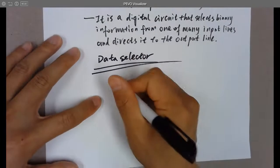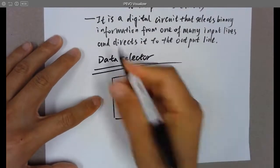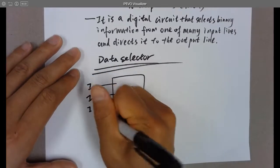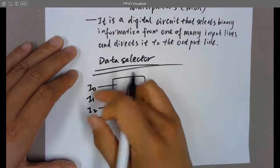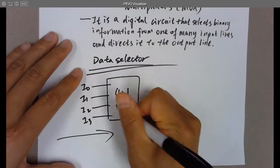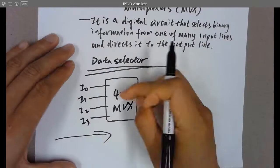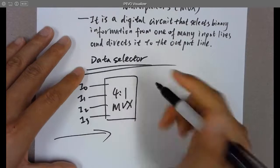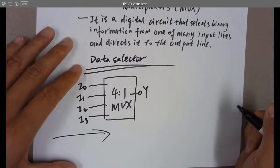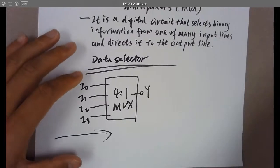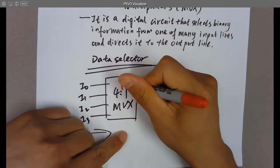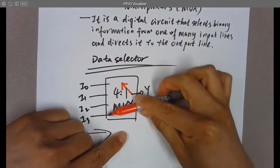If you draw a digital block, for a 4-to-1 MUX you have inputs I0, I1, I2, I3. It picks up one of the 4 inputs and delivers that to the output line. You can draw a little switch inside to show it's selecting which input should be connected to the output.